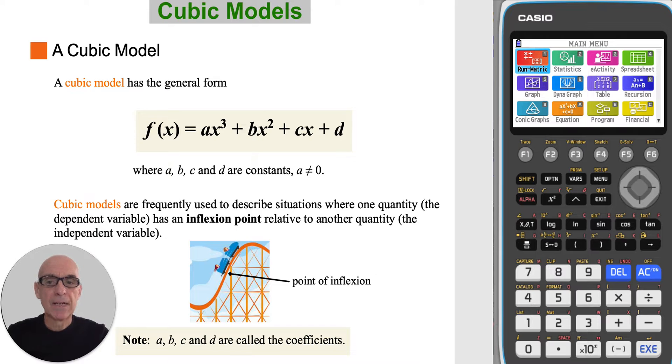A cubic model has the general form f is equal to ax cubed plus bx squared plus cx plus d, where a, b, c and d are constants called coefficients.